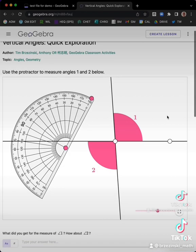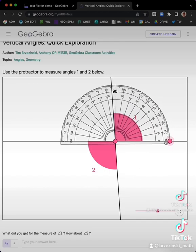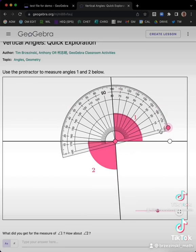Like, for example, here, vertical angles. Having kids use this virtual protractor to measure, and they have to conclude that the vertical angles are equal.